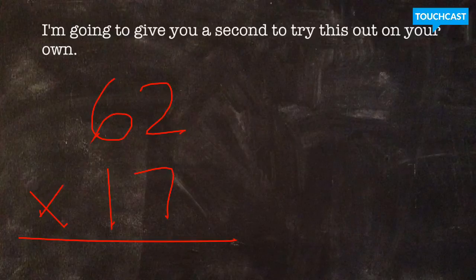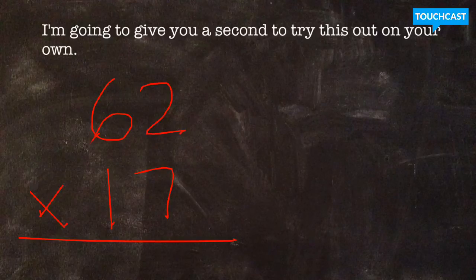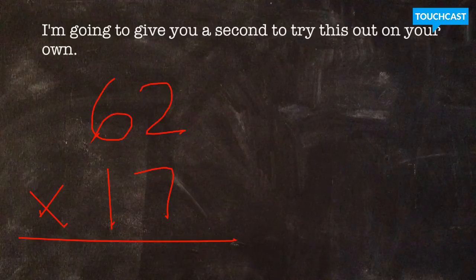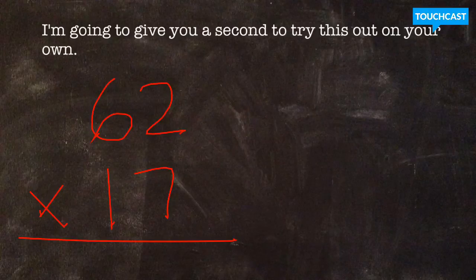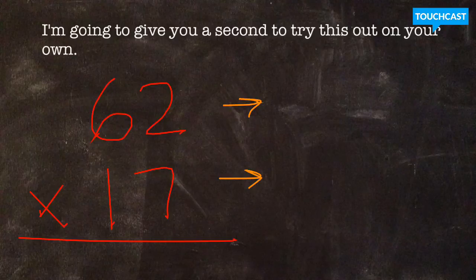So I'd like to give you a minute now to do the same thing we did with strategy 1. I'm going to give you a minute to try this out on your own. You can set up the equation 62 times 17 in your math journal. Grab your pencil and get ready to try to solve using the strategy of rounding both factors. So go ahead, get your paper set up, and pause the video now.